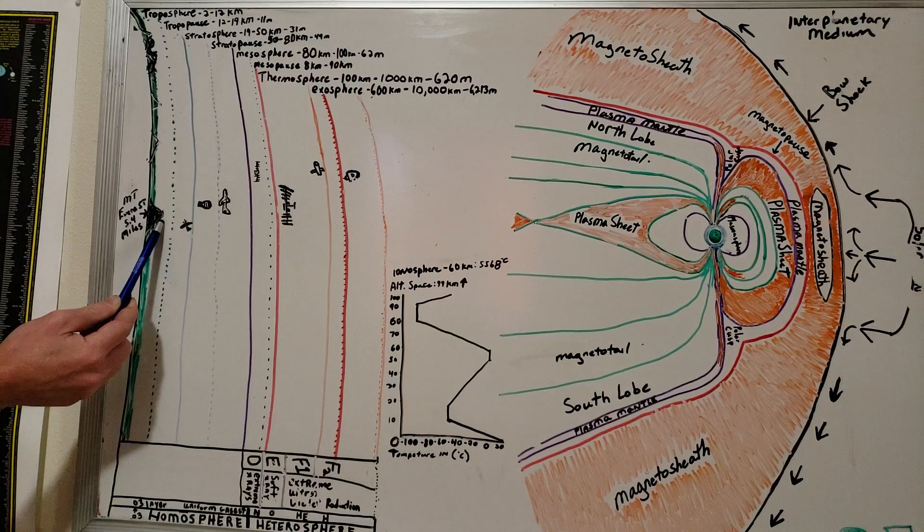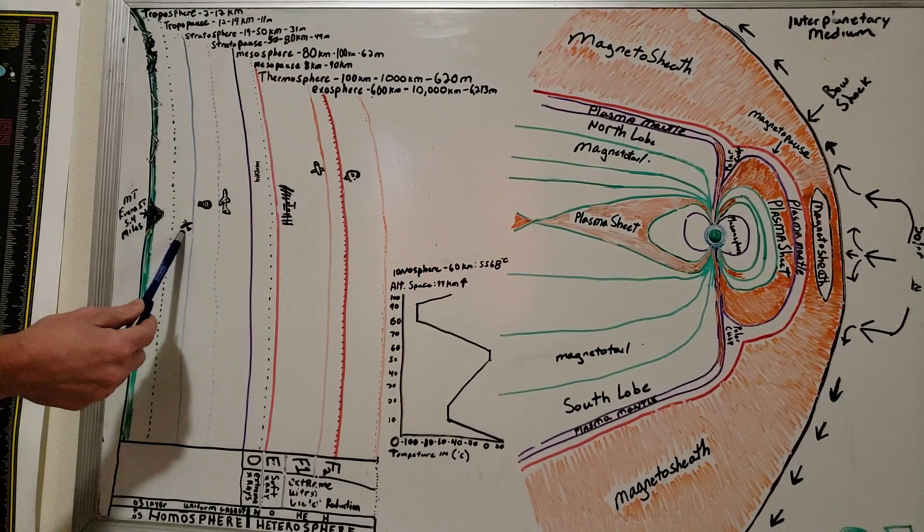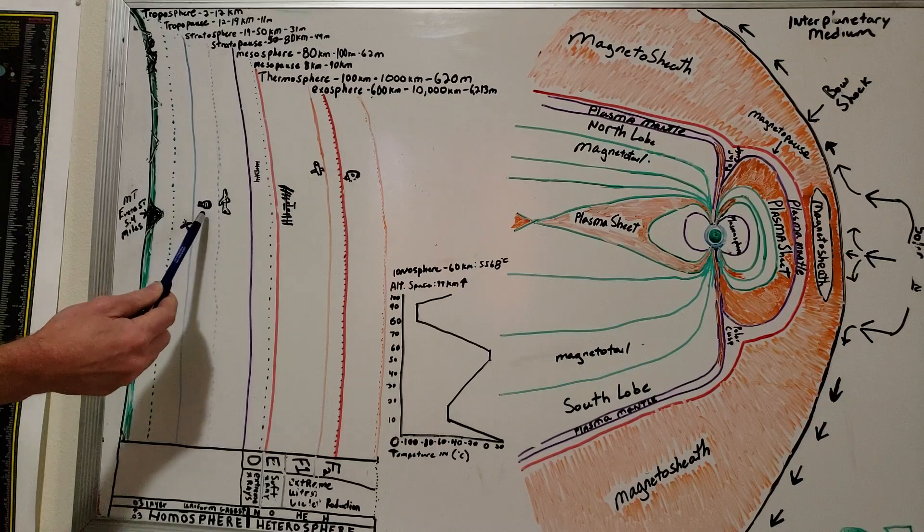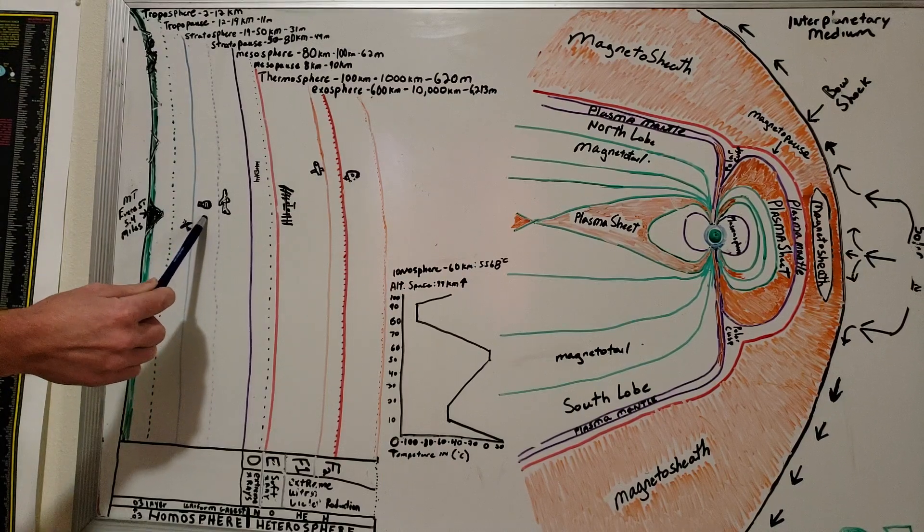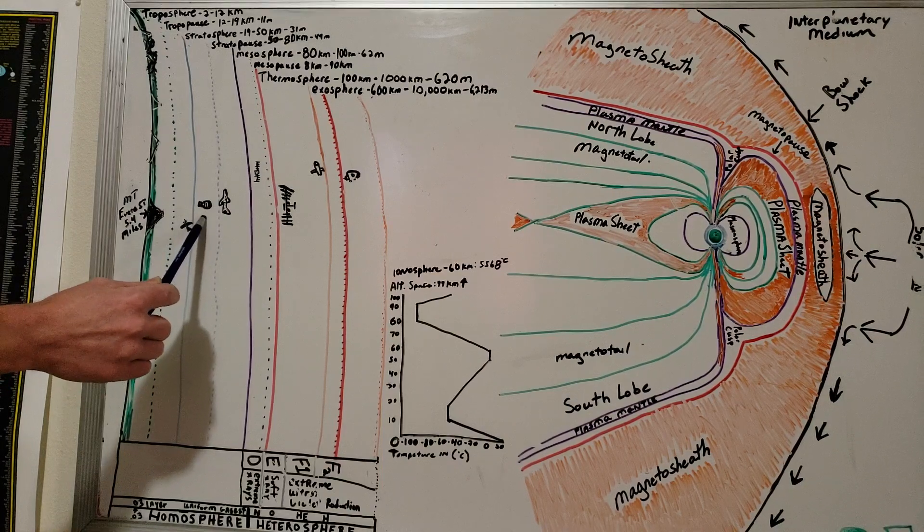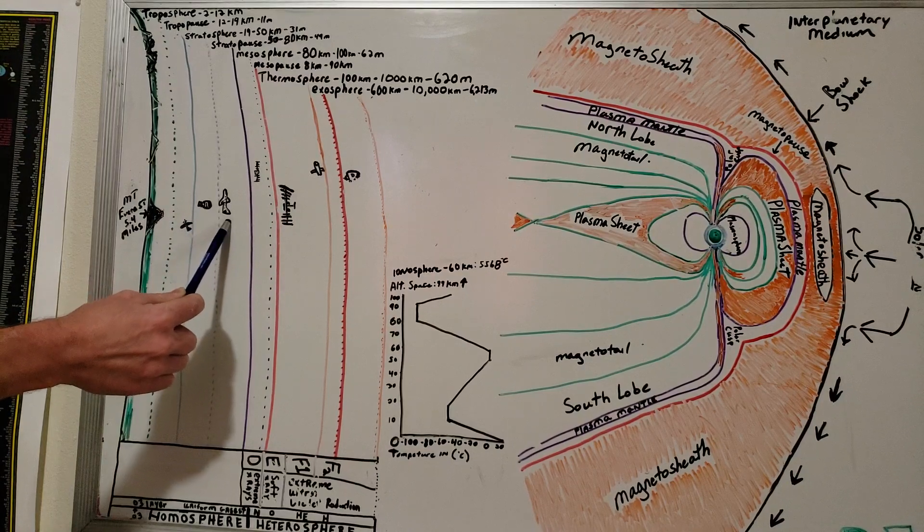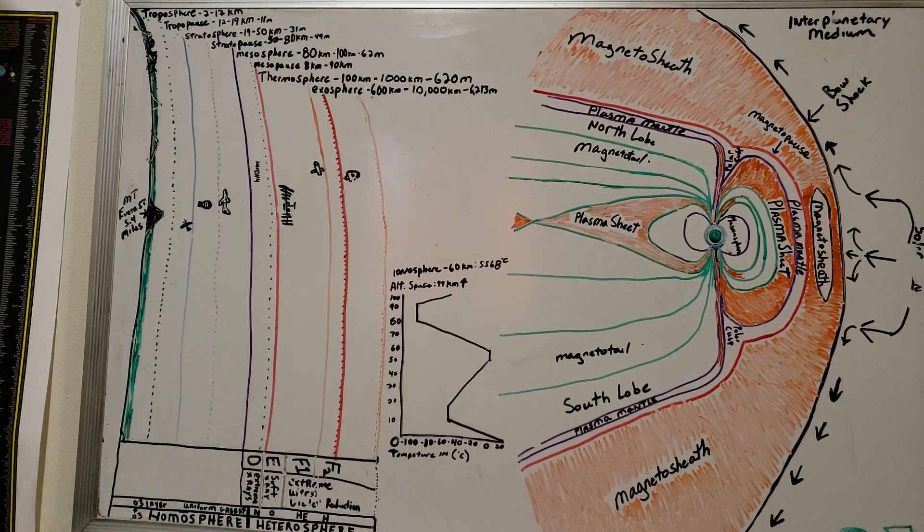You start to need oxygen as you get to the top of Mount Everest, and when you're flying in planes here, you need cabin pressure in your own atmosphere. Weather balloons, various NOAA and NASA balloons fly up in this area, and higher above that are our greatest military airplanes.